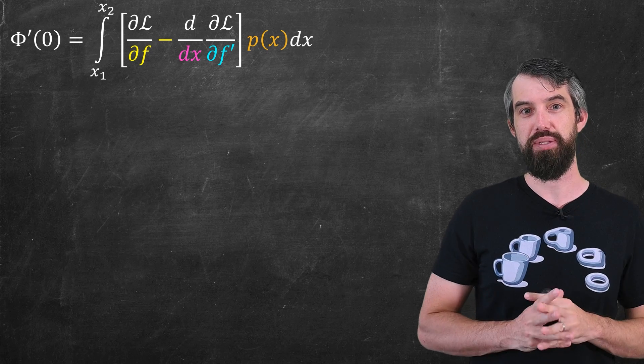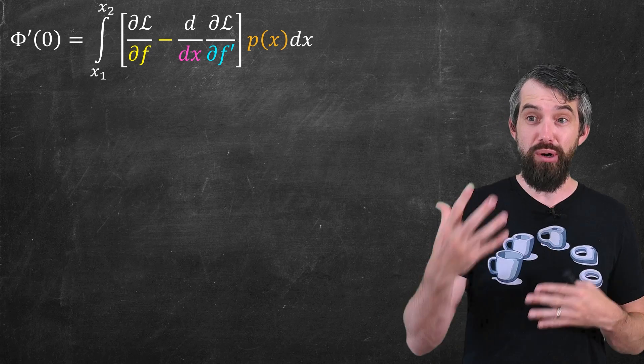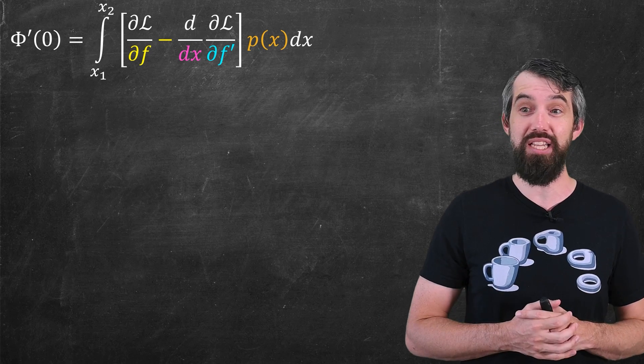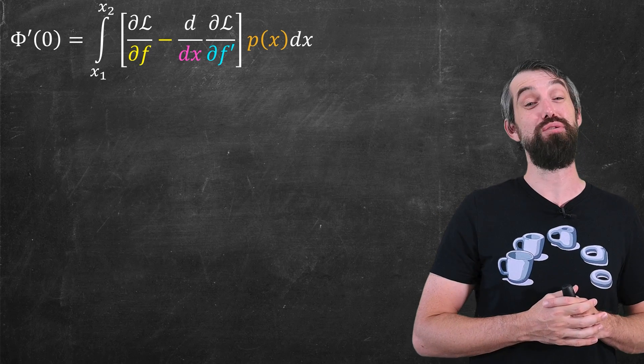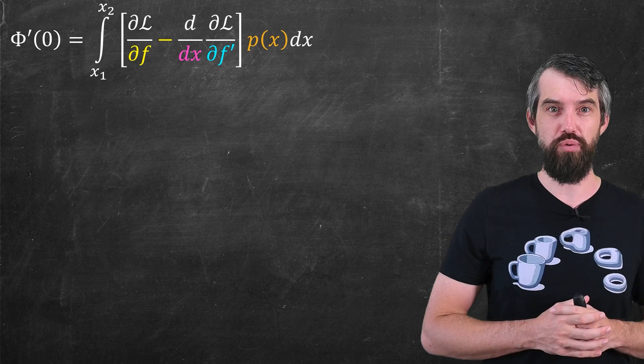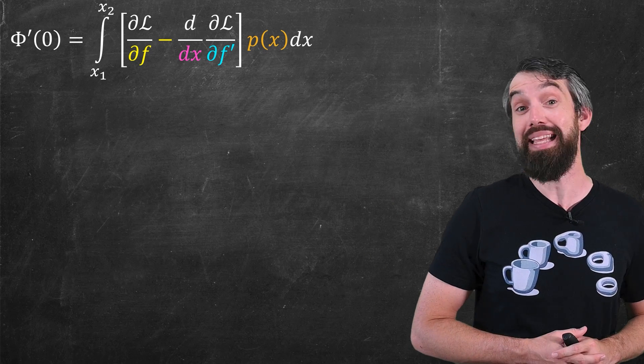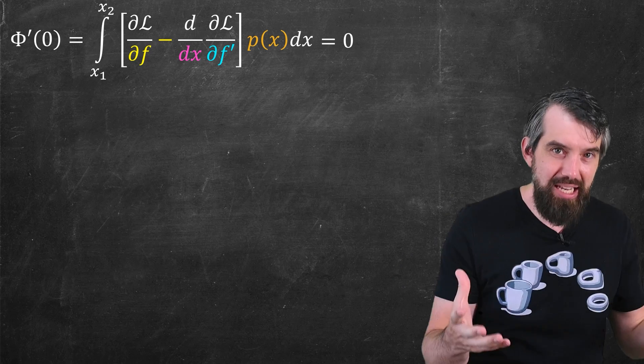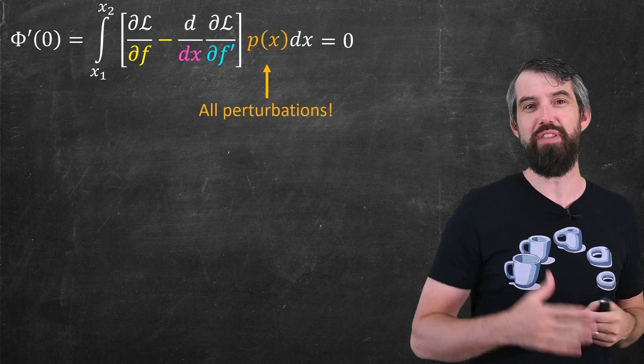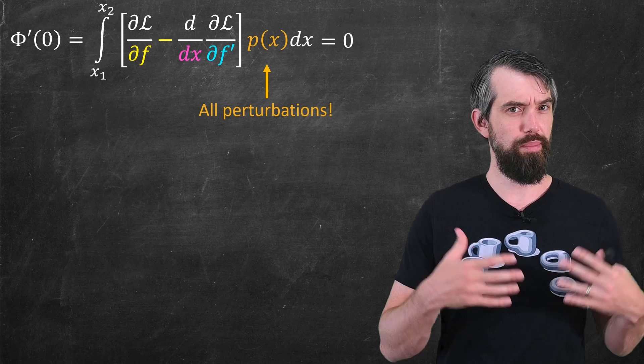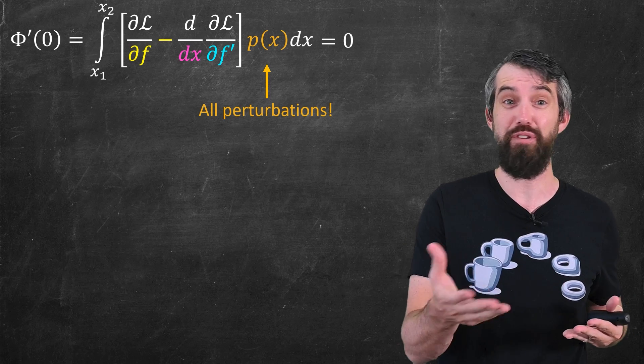Remember what p(x) was. p(x) was that perturbation function. And the idea was that if f(x) was the minimum, then you could give me any perturbation that you so wished. And when you took the derivative at zero, and set it equal to zero, indeed we're going to set this whole thing equal to zero. And so we have this integral that has to be zero. But it has to be zero for every one of the p(x)'s.